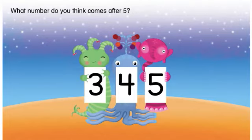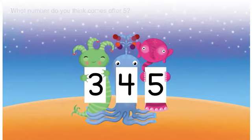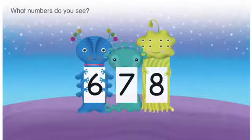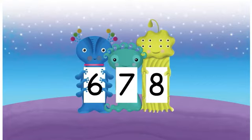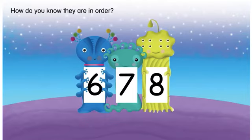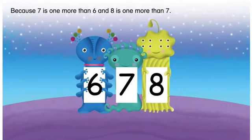What number do you think comes after five? Let's find out. What numbers do you see? Let's say the numbers aloud: six, seven, eight. How do you know they are in order? Because seven is one more than six, and eight is one more than seven.